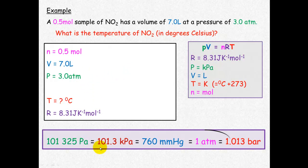so we convert from atmospheres to kilopascals. This is our known, this is our unknown, so we multiply by unknown over known: 101.325 divided by 1, which gives 303.9 kilopascals.